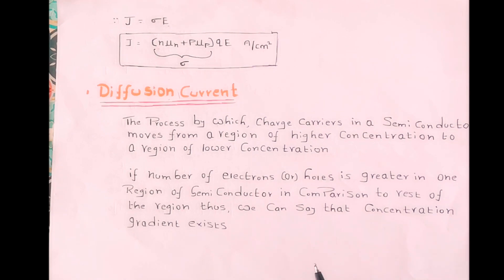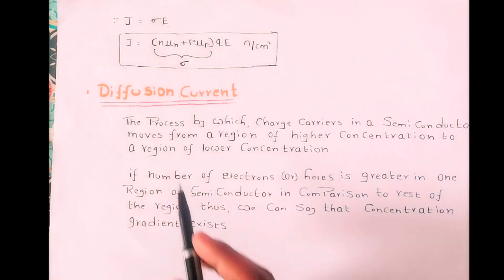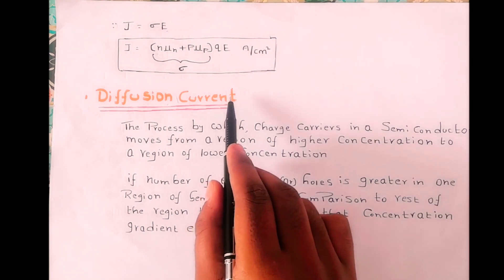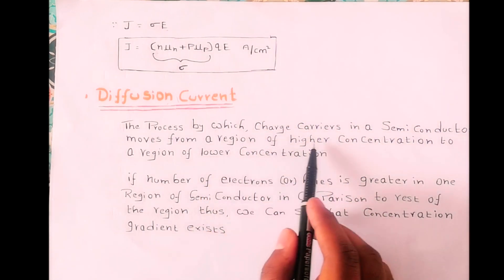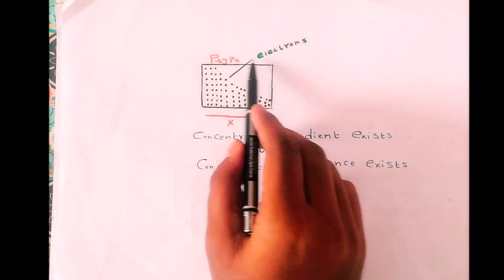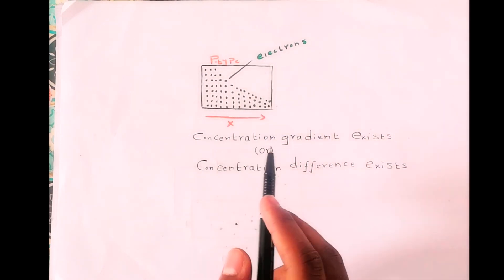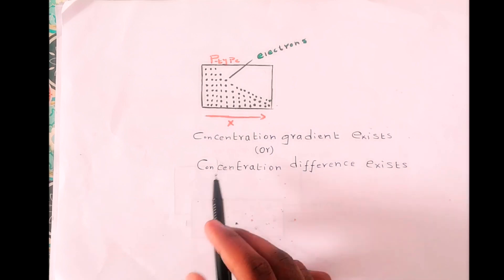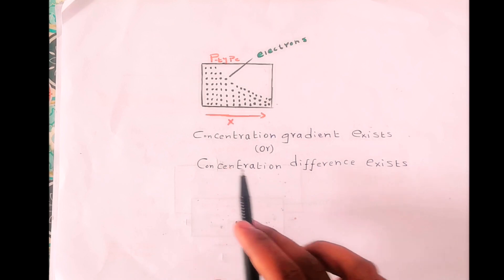Now let's discuss diffusion current. What is diffusion current? It is another type of current that flows in a semiconductor device. Before understanding this concept, let's see what diffusion means. Diffusion is the movement of something from a region of higher concentration to lower concentration. In the case of diffusion current, it is the movement of charge carriers from a region of higher concentration to a region of lower concentration, and this process causes diffusion current to flow. We will understand this with the help of a diagram using a p-type semiconductor material, where the electron number decreases as we move in the x direction, indicating a concentration gradient.